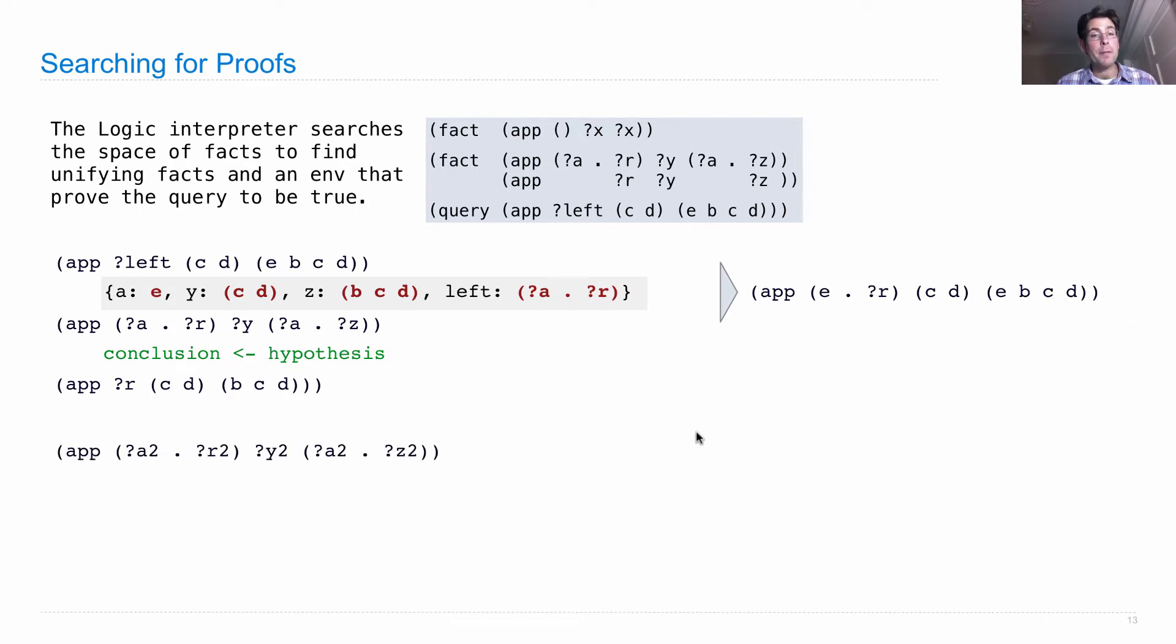And in order to do that, we'll unify it with the conclusion of the recursive fact again. Now notice that this is a slightly different version. So I added a bunch of twos everywhere, whereas I left them out here. And that's because the second time we apply the same recursive rule, we're really using different variables in order to do it. So we can form a unification between this hypothesis and this conclusion, according to a separate assignment, which notices a little bit simpler than before. Because in particular, now we have b here, and z is cd, as opposed to the old z, which was bcd, and we had e right at the beginning.